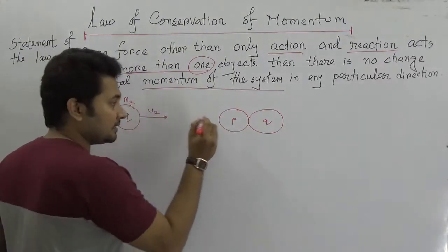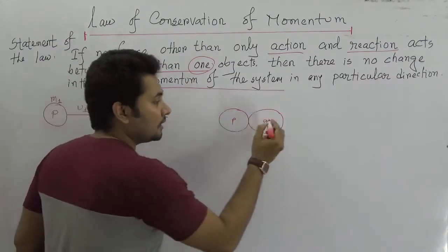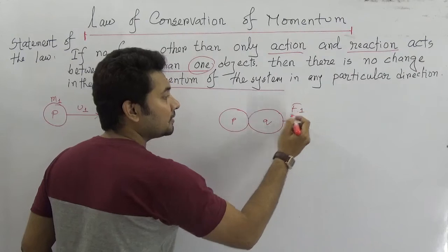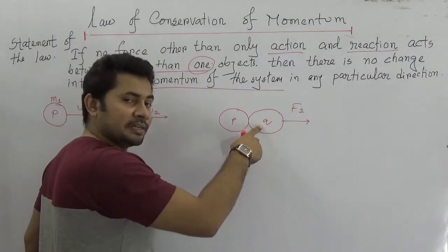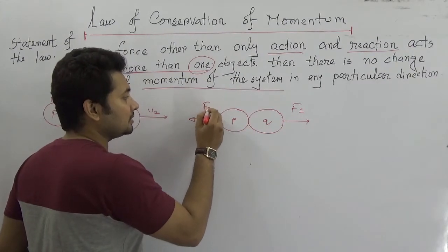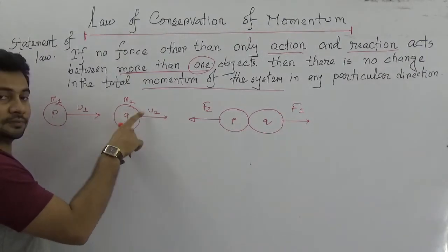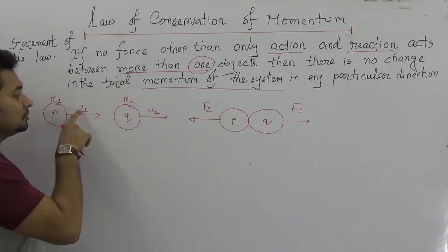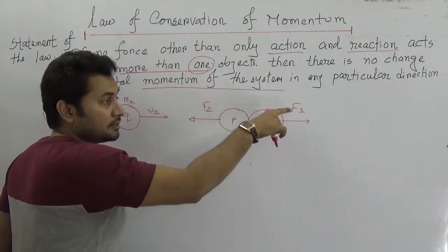So when P gives an action to Q then it will feel an action towards Q which is F1, and according to Newton's third law this body Q will definitely have the same magnitude reaction to P which is F2, if U1 is greater than U2.